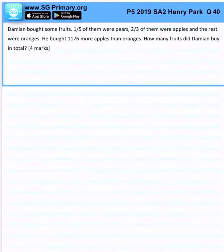Now, Damien bought some fruits. One-fifth of them were pears, two-thirds of them were apples, and the rest were oranges. He bought 1,176 more apples than oranges. How many fruits did Damien buy in total?